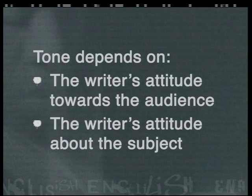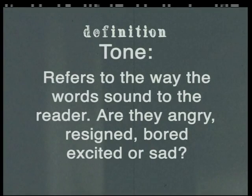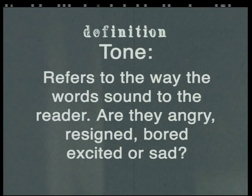Now let's start by looking at tone. Much of what you say depends on how you say it, or your tone of voice. Tone in a poem depends on two different things: the writer's attitude towards the audience, and the writer's attitude about the subject. Tone refers to the way the words sound to the reader — are they angry, resigned, bored, excited, or sad? The subject of the poem can give us clues about the tone of the poem. A poem about the death of a loved one would never have a light-hearted tone.